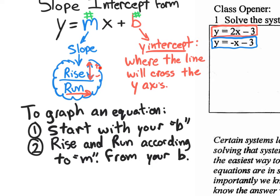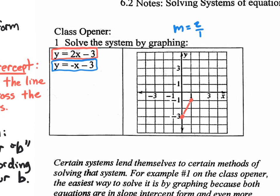The rise can be positive or negative — meaning up or down — and you always run to the right. To extend the line the other way, use the backwards pattern: over 1 to the left, down 2. That gets the line across the whole graph.